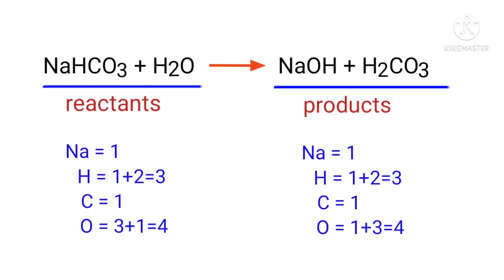If you look at this equation, the number of atoms at the reactants side are the same as the number of atoms at the products side. There are 1 sodium atom, 3 hydrogen atoms, 1 carbon atom, and 4 oxygen atoms on both sides.